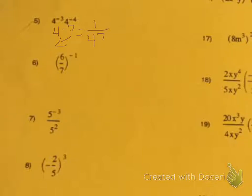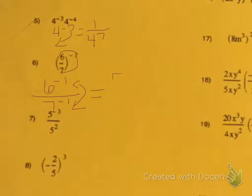Our next rule: we have to distribute first to the top and bottom, and we get 6 to the negative 1 over 7 to the negative 1. Both are negative, so we have to move the 7 up and the 6 down — we need to take the reciprocal and make the exponents positive.